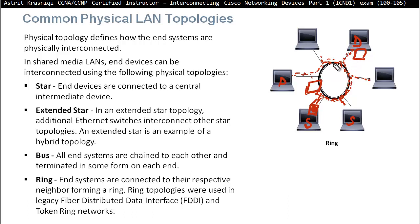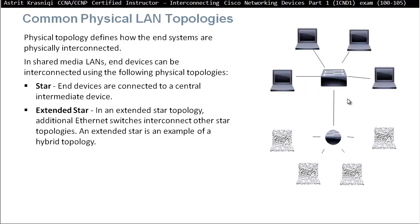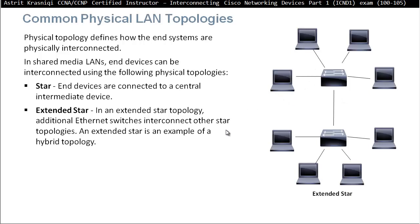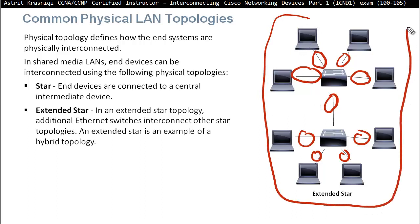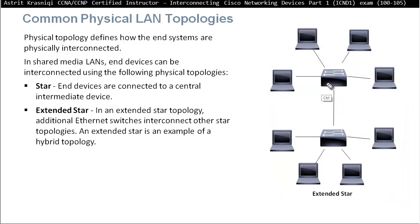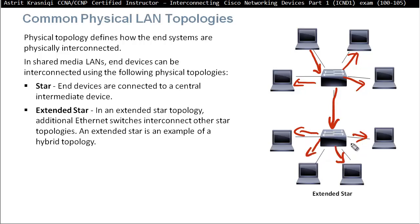In the star topology or extended star topology, every port on the switch is its own collision domain. So for example each port represents one collision domain — there are nine collision domains here. They all work in one broadcast domain, meaning the switch doesn't stop the broadcast. If one device sends a broadcast message, the switch is going to flood it out every port except the one it came in on, including forwarding it to any connected switches. So it's one broadcast domain but nine collision domains.